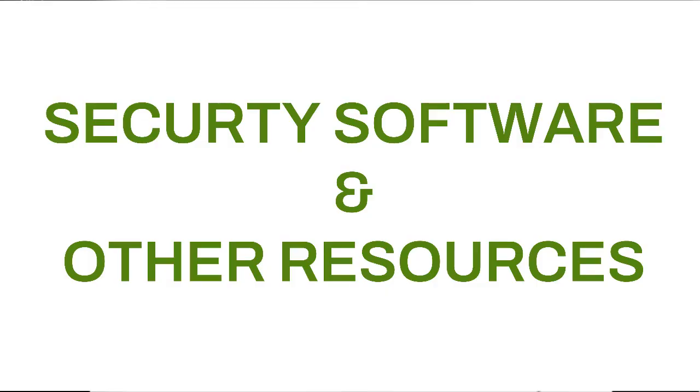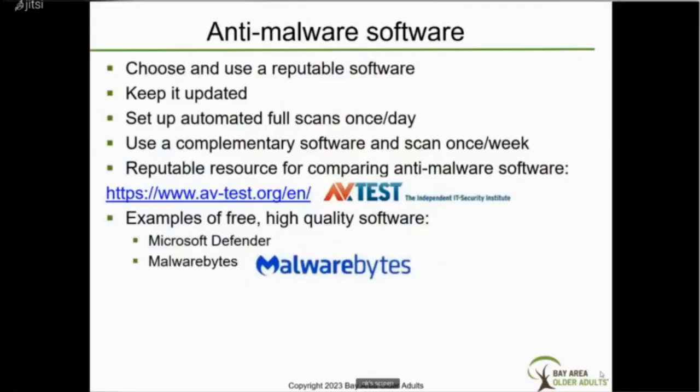Next we'll cover security software and other helpful resources. When choosing anti-malware software, choose a reputable company. Just like all your other apps and your operating system, keep the software updated. Set automated full scans once per day, and use a complementary anti-malware software to scan once per week. The link on this page is from a reputable source and compares anti-malware software.